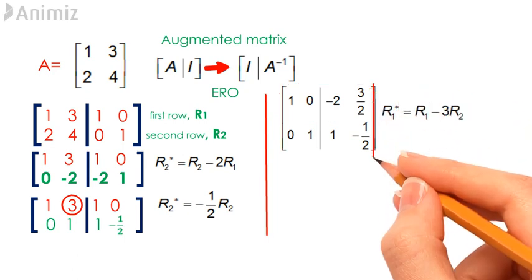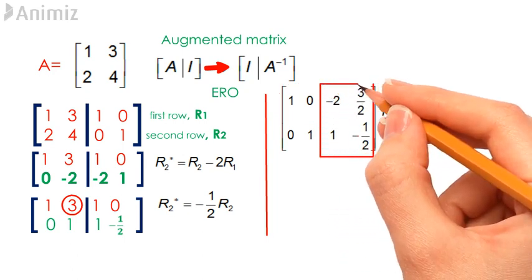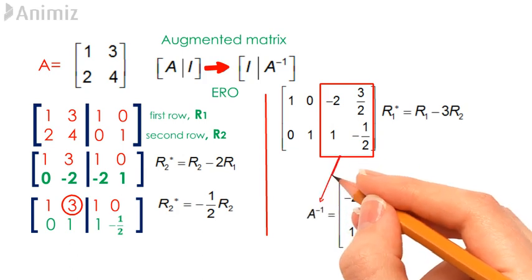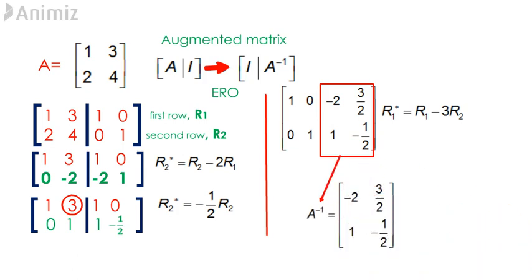Looking at our augmented matrix form, we have now obtained the identity matrix on our left and therefore, what we have on our right is A inverse. With that, A inverse is equal to negative 2, 3 over 2, 1, negative half.